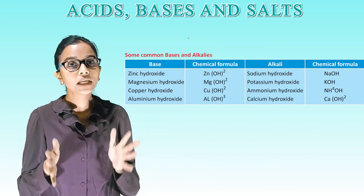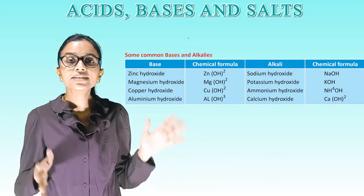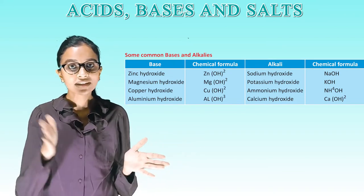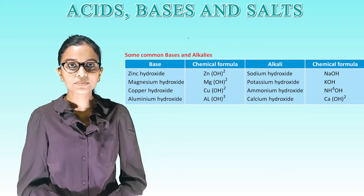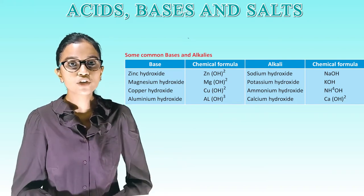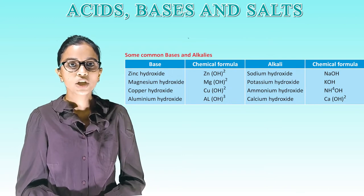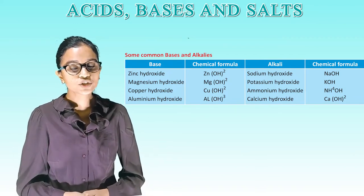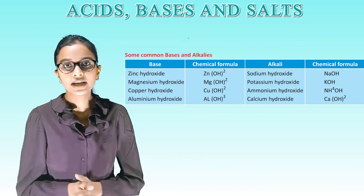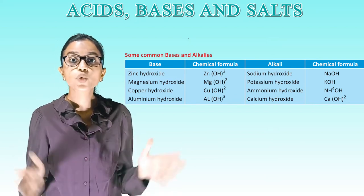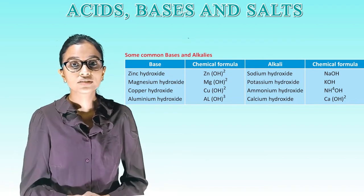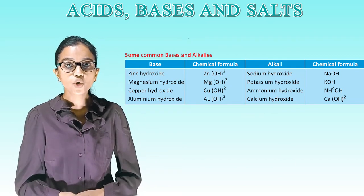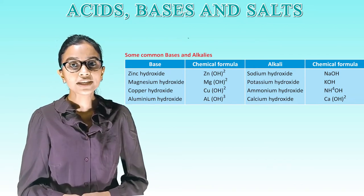Some common bases and alkalis — are you able to see this table? It lists common bases and alkalis with their chemical formulas. Bases: zinc hydroxide Zn(OH)₂, magnesium hydroxide Mg(OH)₂, copper hydroxide Cu(OH)₂, aluminium hydroxide Al(OH)₃. Alkalis: sodium hydroxide NaOH, potassium hydroxide KOH, ammonium hydroxide NH₄OH, calcium hydroxide Ca(OH)₂.